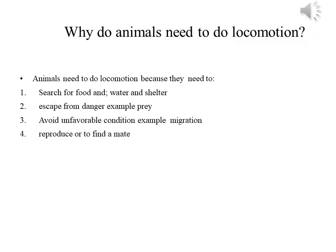The question is: why do animals need to do locomotion? There are many reasons. Animals need locomotion because they need to search for food, water, and shelter. They need to escape from danger, for example from prey. They need to avoid unfavorable conditions, for example migration — if they face unfavorable conditions, they will move to a place where they will be safe. Another reason is to reproduce or to find a mate.